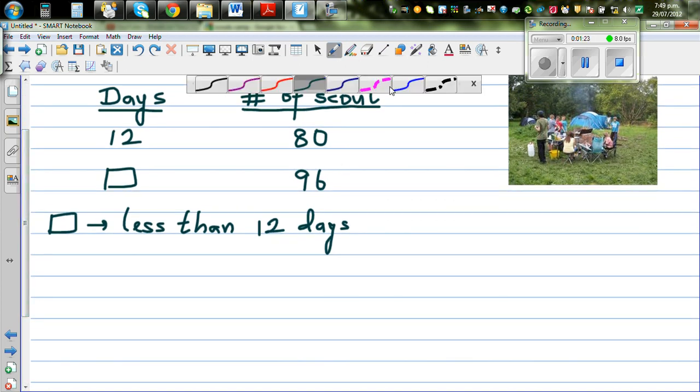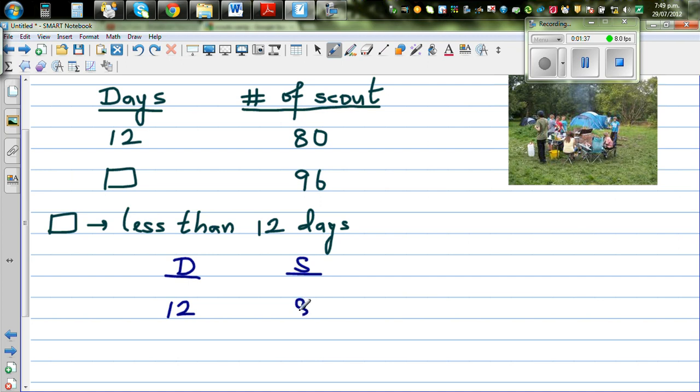I have done this in a previous video, but I would do it again. So let me write days and scouts. S for scouts, number of scouts and D for number of days. So the information that we have is, for 12 days you have got enough food for 80 scouts.